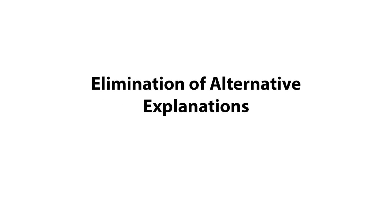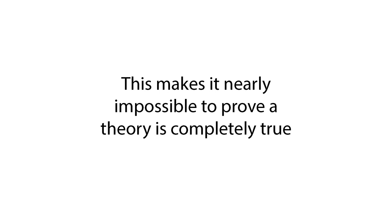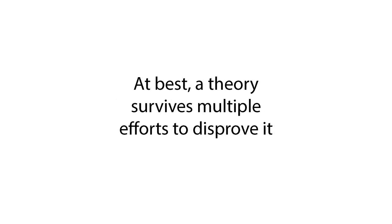The final criterion is the elimination of alternative explanations. This is a tricky one. It's ultimately impossible to prove completely, which is why we can't prove theories to be true. We can only show that they have withstood repeated attempts to prove them untrue.